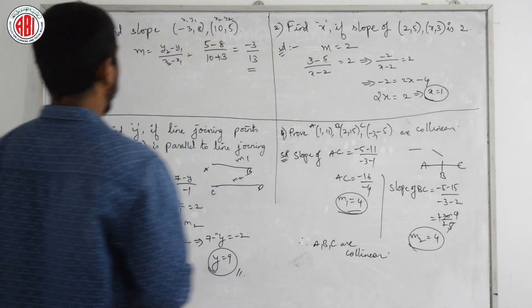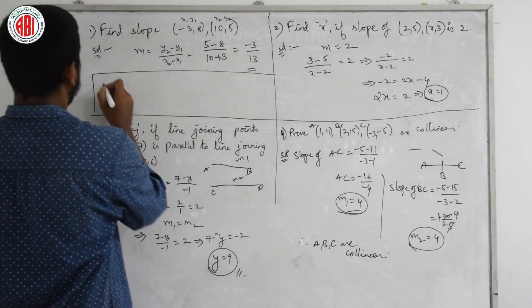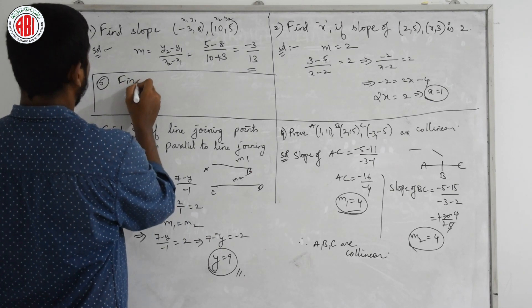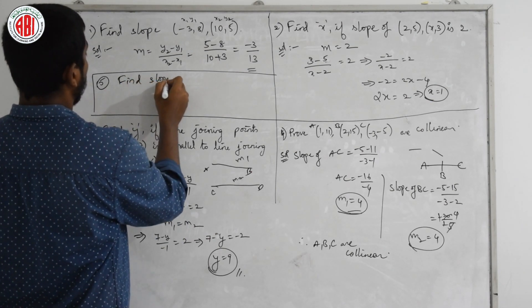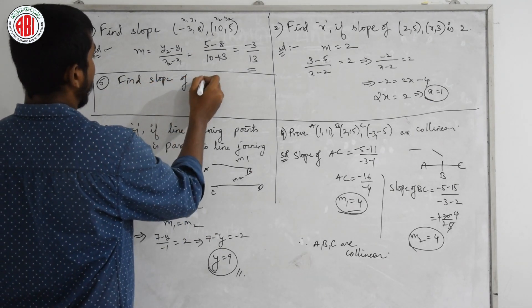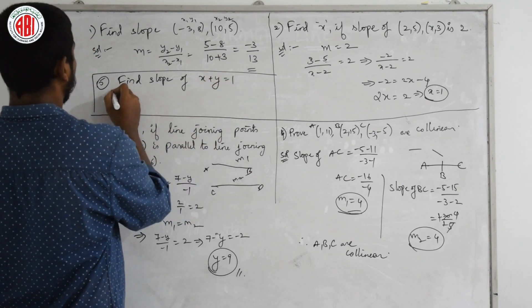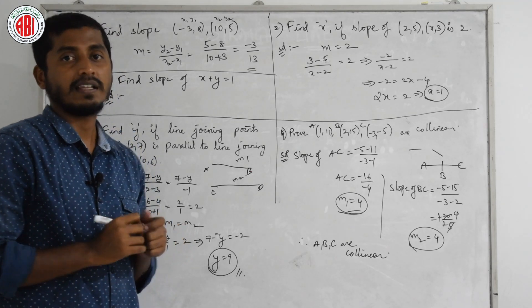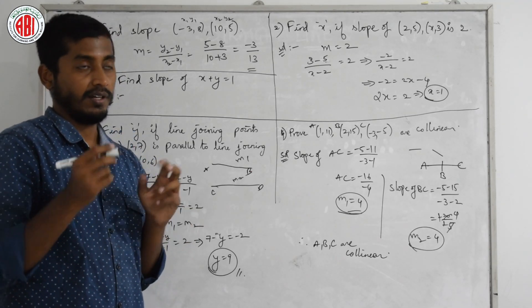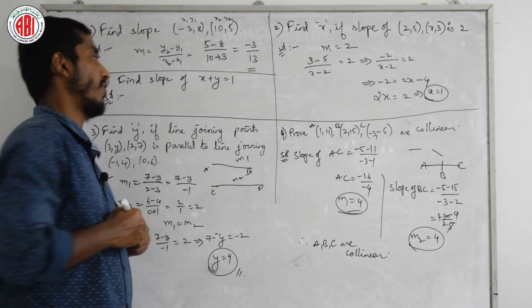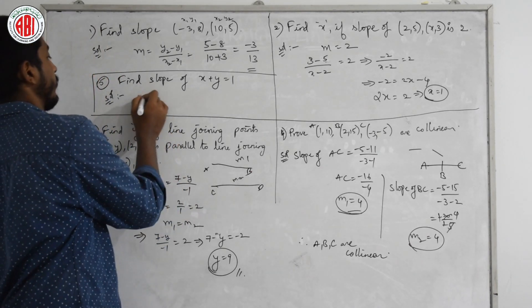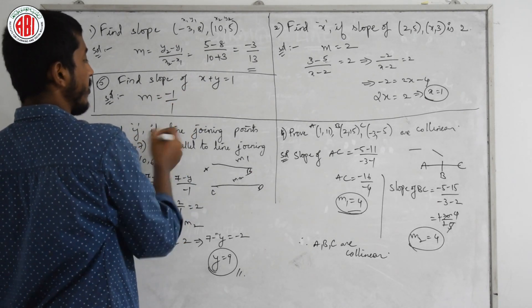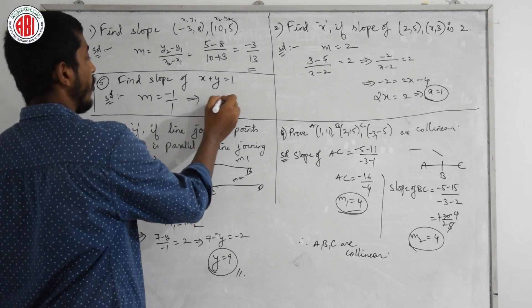One more example: finding the slope for a given equation. If the equation is x + y = 1, using the formula — slope = negative of coefficient of x divided by coefficient of y — the coefficient of x is 1 and coefficient of y is 1, so slope = −1/1 = −1.